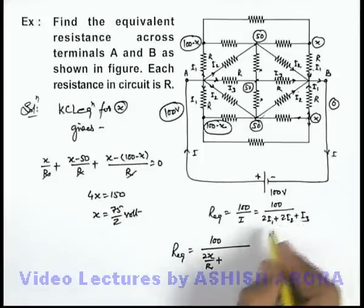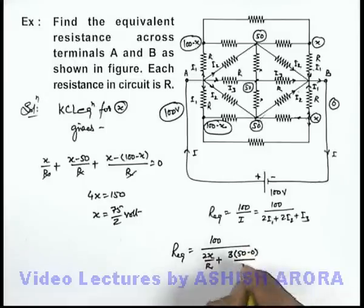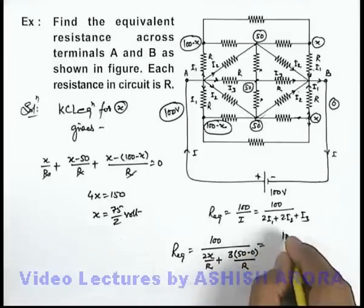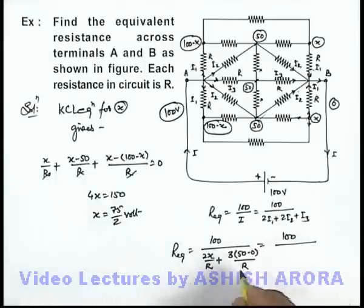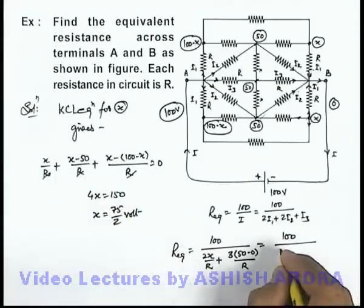So these 3 can be combined and it can be written as 3 times 50 minus 0 by R. And here on substituting values this will give us hundred divided by 2x we can write as 75, this will be 75.